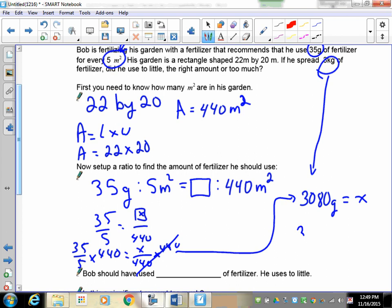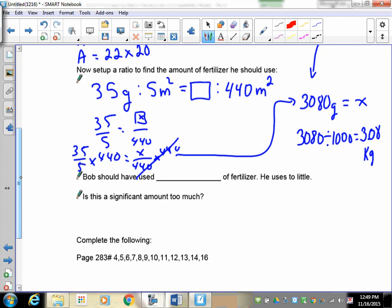He's supposed to spread 3,080 grams, so we have to do a unit change here. There are 1,000 grams in a kilogram. So to convert this out you're going to have to take the 3,080 and divide it by 1,000, and you will find that Bob used 3.08 kilograms on his lawn. So the question says he used 3.08 kilograms of fertilizer. He uses too little.